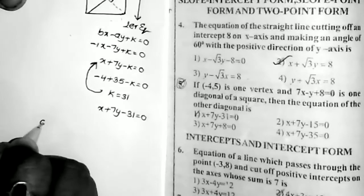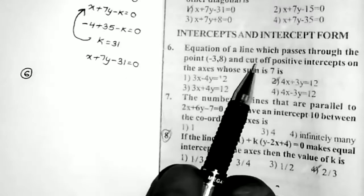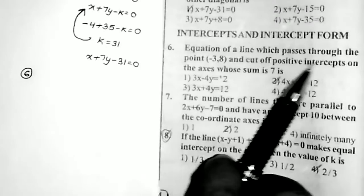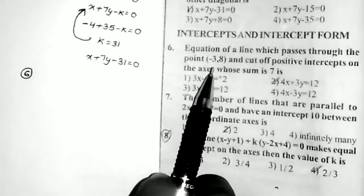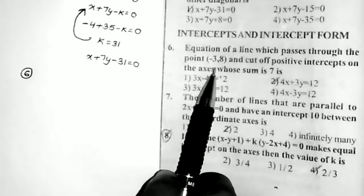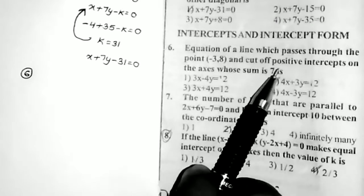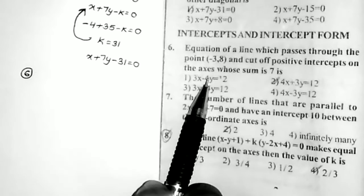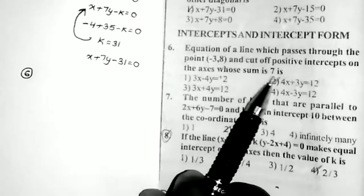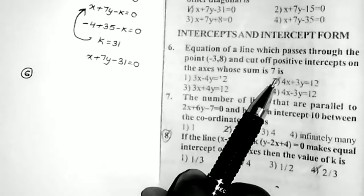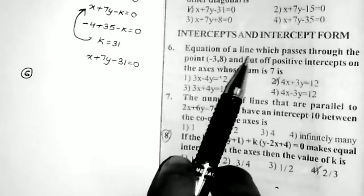Sum number 6: find the equation of the line which passes through the point (−3, 8) and cuts off positive intercepts on the axes whose sum is equal to 7.